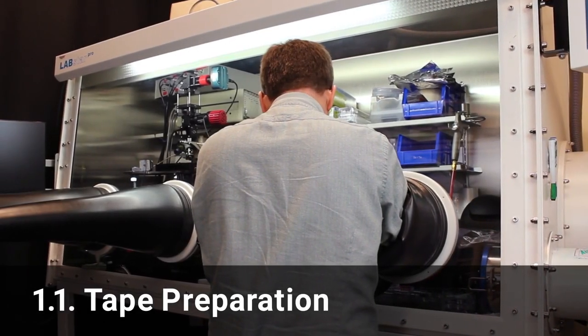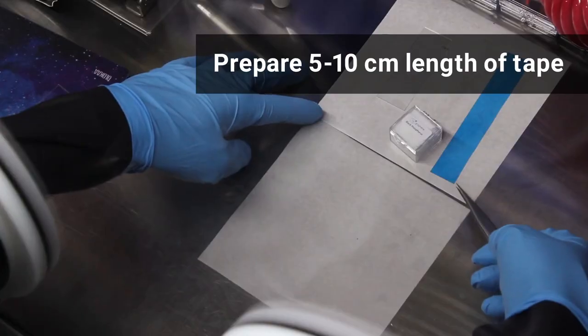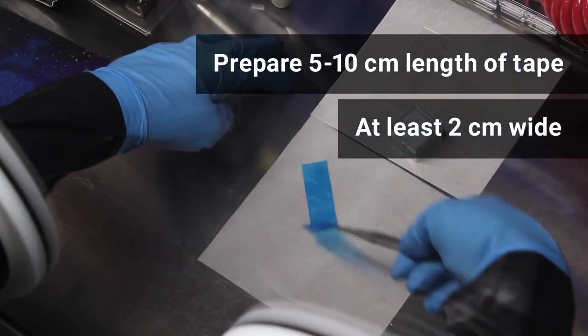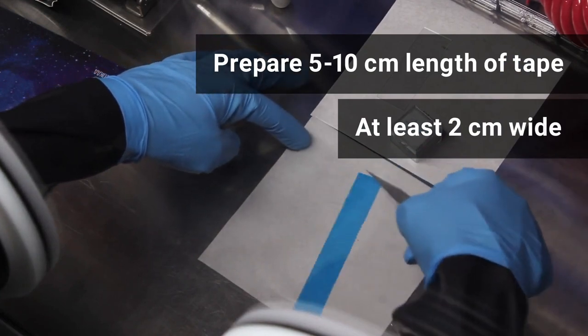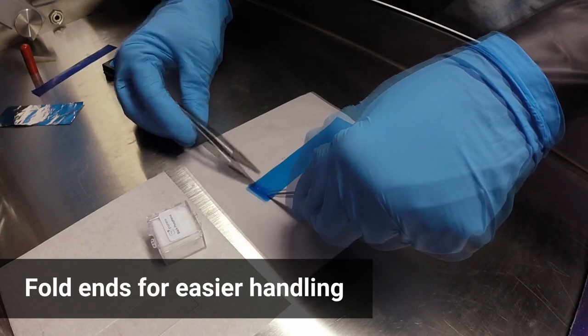Working inside a glove box, prepare a length of tape that is about 5 to 10 cm long and at least 2 cm wide. Place it sticky side up on the working area. Fold up the ends to make it easier to handle.